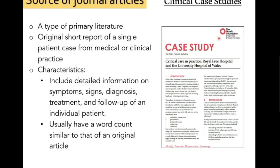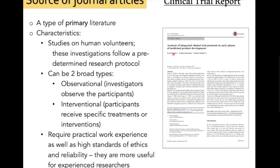Another type of primary literature is the clinical trial report. It comprises a study on human volunteers and usually has a predetermined research protocol. A clinical trial report can be divided into two types: observational and interventional. Clinical trial reports are usually produced by highly experienced researchers.